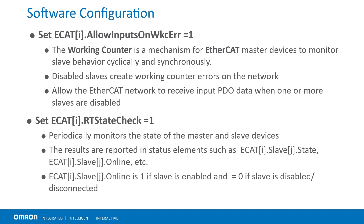Specifically, ECAT slave online is used to monitor the status of a slave device. If it is 1, then the device is enabled. 0 means the device is disabled or disconnected and not available for use.